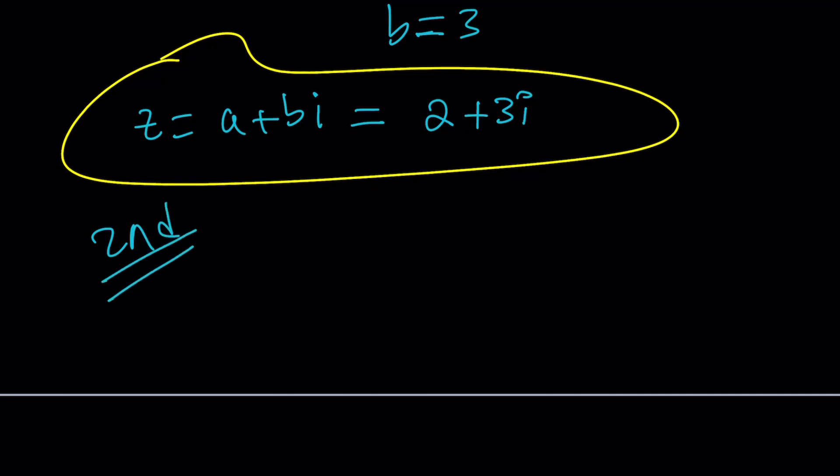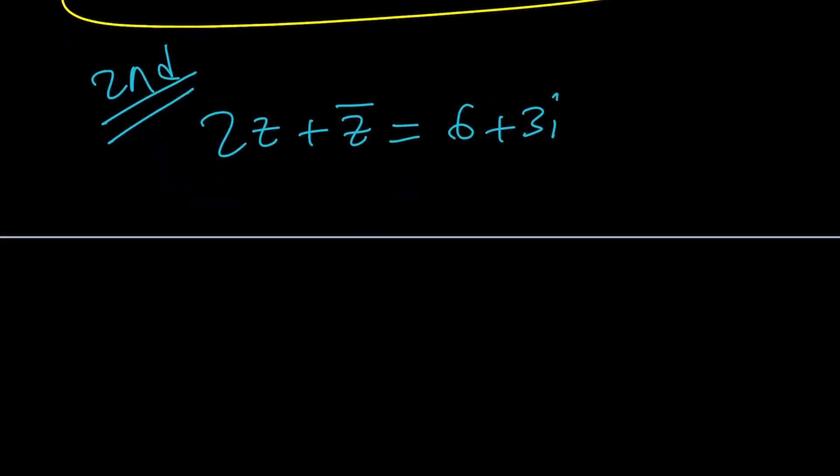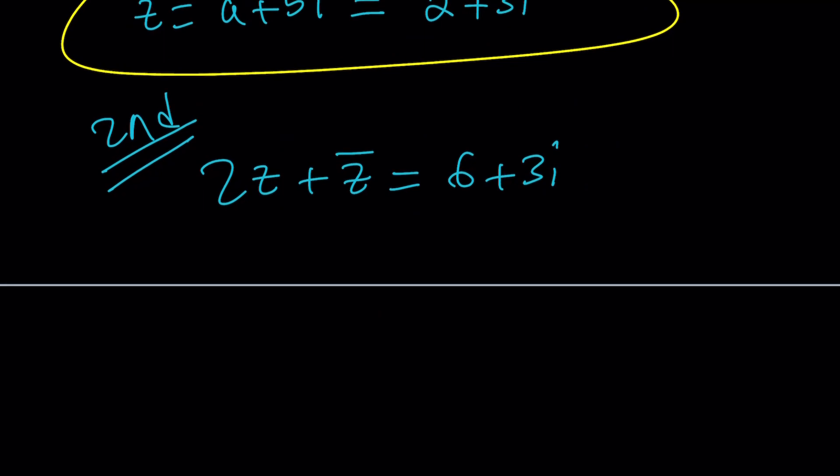So the second method again uses a similar idea. If you know of a third method, I couldn't think of one. Let me know. I tried the polar form and maybe I'll show you after this. So another way to do this is using the polar form of a complex number.